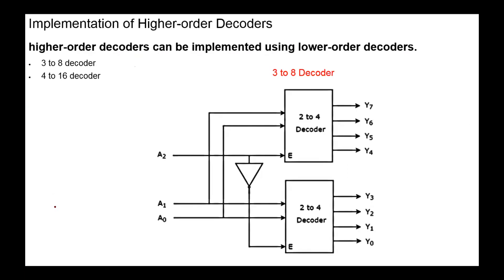Higher-order decoders can be implemented using lower-order decoders. For example, a 3-to-8 decoder can be implemented using two 2-to-4 decoders, and a 4-to-16 decoder can be implemented using two 3-to-8 decoders, and so on.